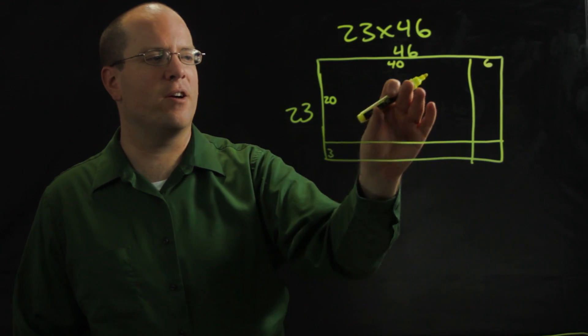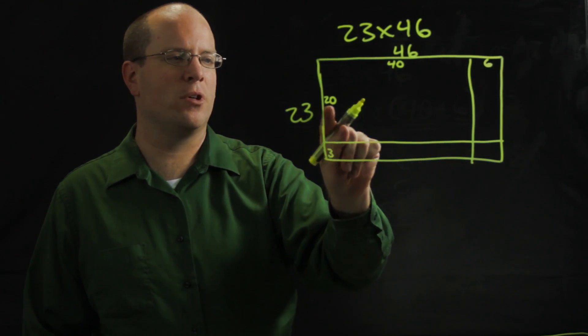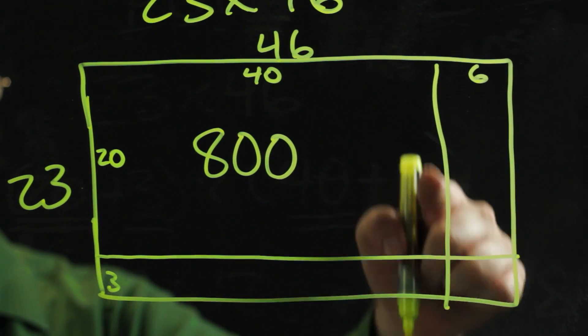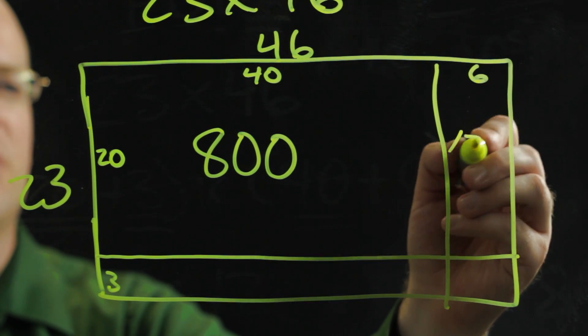Now I just need to find the area of each section and add them up. 20 times 40 is 800. Now this section is 20 by 6, which is 120.